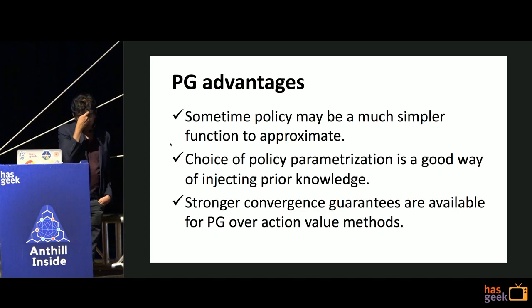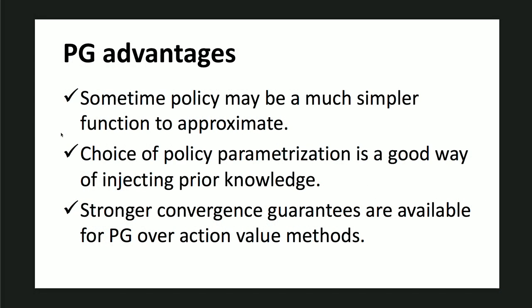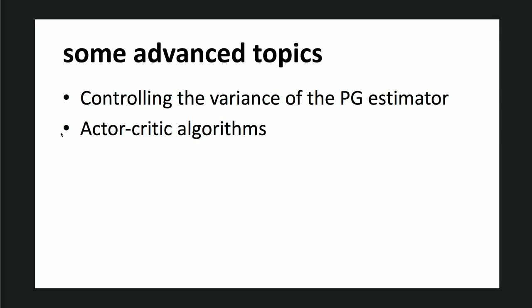Policy gradient is important because it's much simpler to approximate, the choice of policy parameterization is a good way of injecting prior knowledge, and there are stronger convergence guarantees over action-value methods. The equation shown works in theory but has high variance in practice - you use a baseline estimator to subtract and decrease the variance. All the literature is about getting better estimators of the gradient of the value function. The next level is actor-critic algorithms, which use both the value function and the policy gradient.